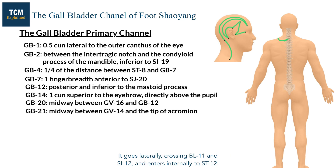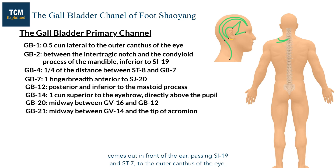It goes laterally, crossing Bladder 11 and Small Intestine 12, and enters internally to Stomach 12. There is a branch that emerges from behind the ear. It enters the ear at Sanjiao 17 and comes out in front of the ear, passing Small Intestine 19 and Stomach 7 to the outer canthus of the eye.